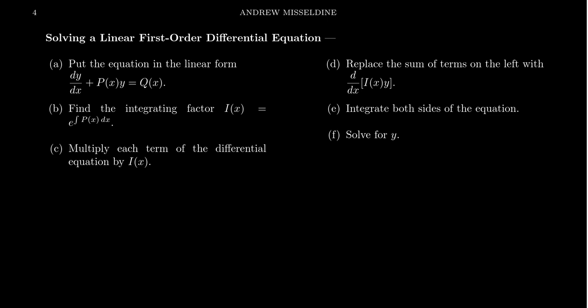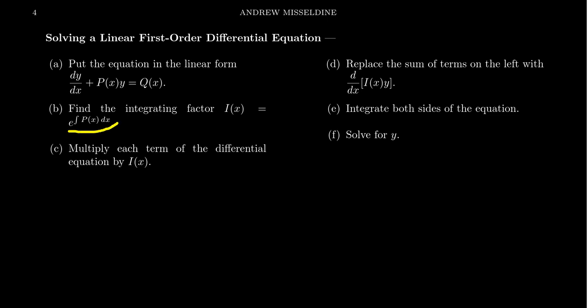The next thing you do is calculate the integrating factor i(x). i(x) is going to be e raised to an anti-derivative of p(x), where p(x) is the coefficient of y when the equation is in standard form. Once you have the integrating factor, you multiply each side of the differential equation by i(x), and simplify the right side.